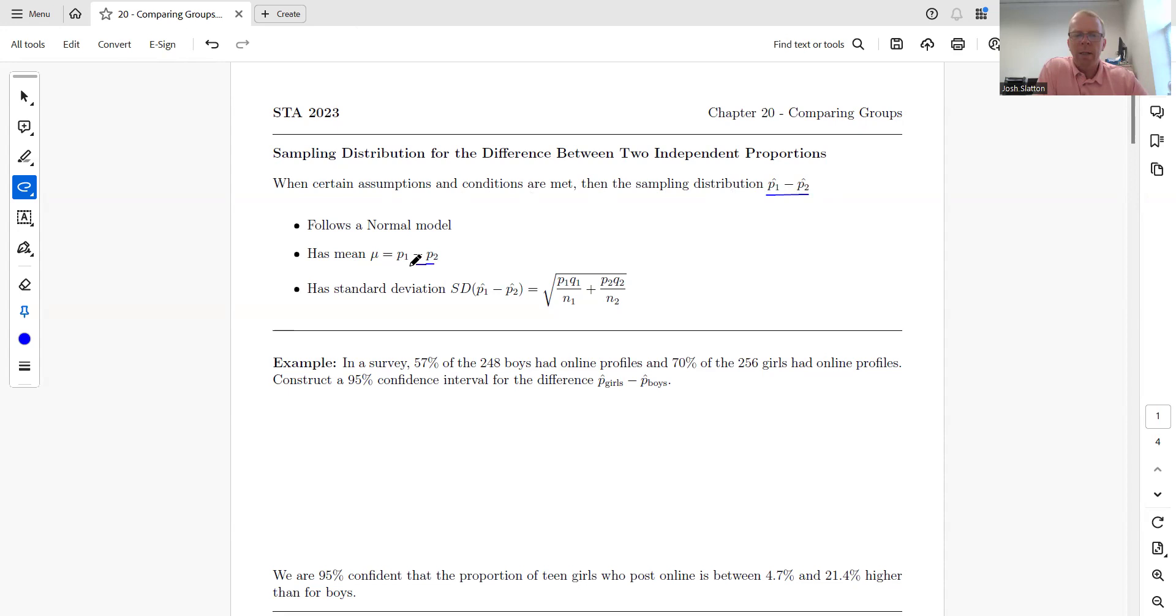We have a mean of the difference, and then this is the part that is going to be a little bit different, a little bit new. Standard deviation of the difference is basically the standard deviation of one plus the standard deviation of the other, and then we take the square root of the whole thing.